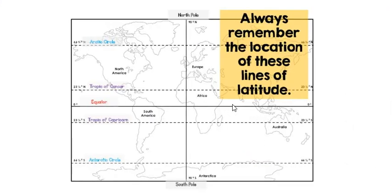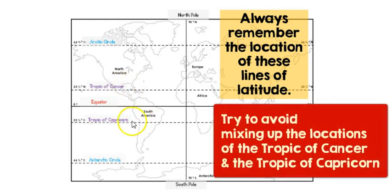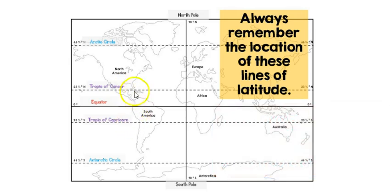You definitely want to have these memorized — equator, Tropic of Cancer, Arctic Circle, Tropic of Capricorn, and Antarctic Circle. If you're going to mix anything up, it'll be the Tropic of Cancer with the Tropic of Capricorn. It helps to think of cancer as being more important or deadly, so it goes up to the north.